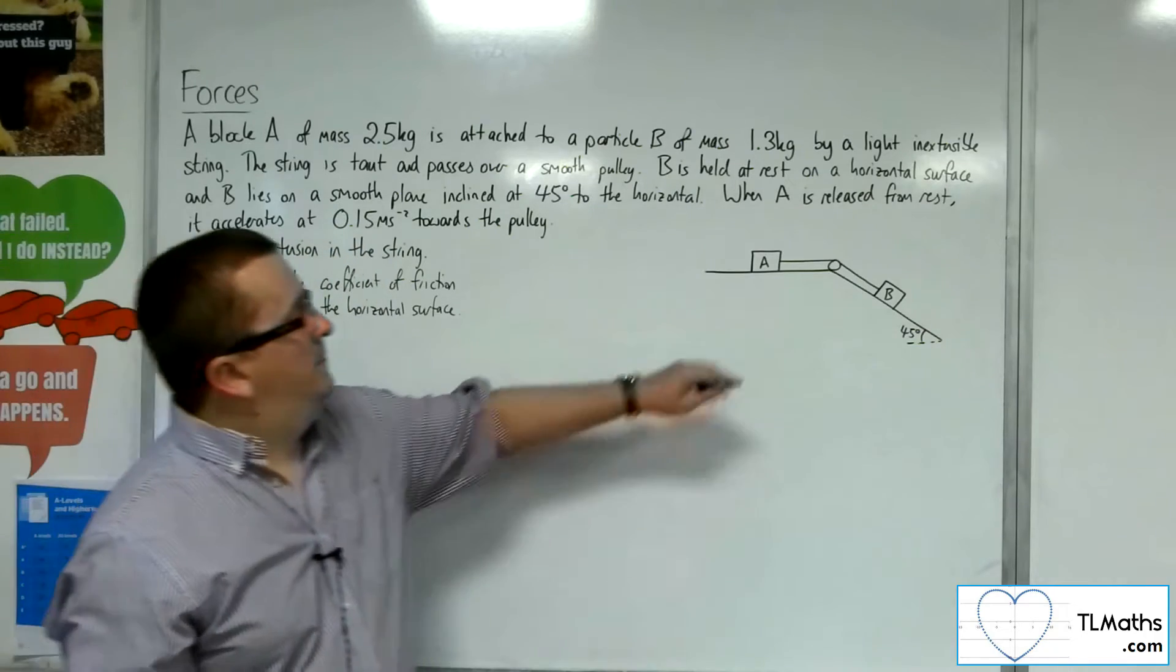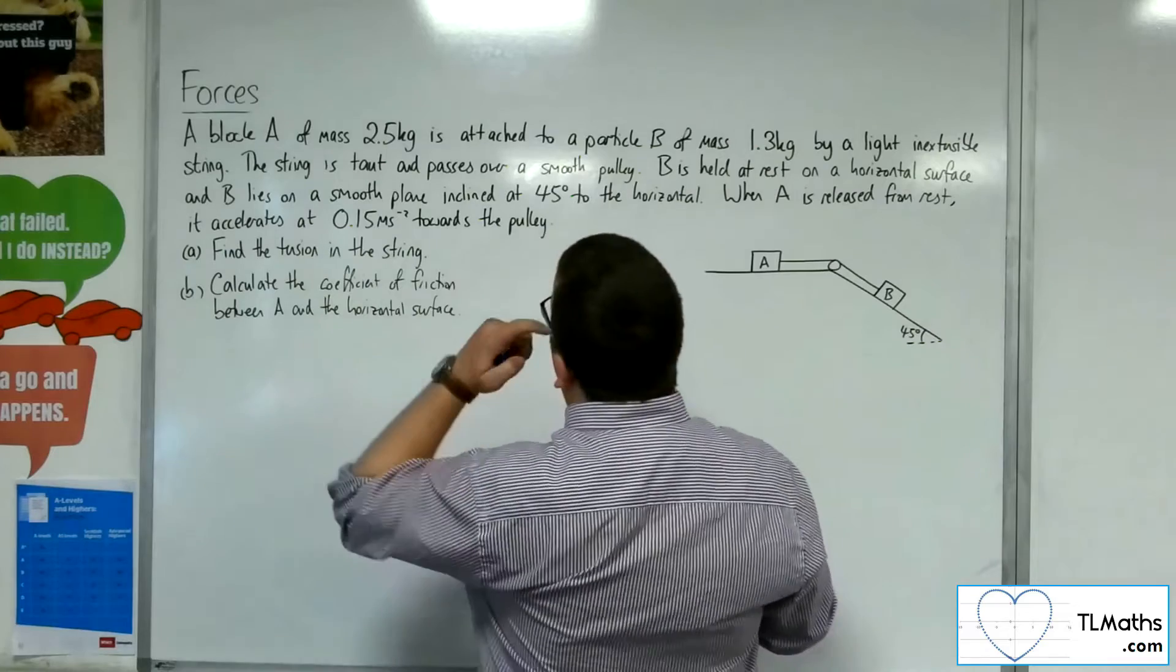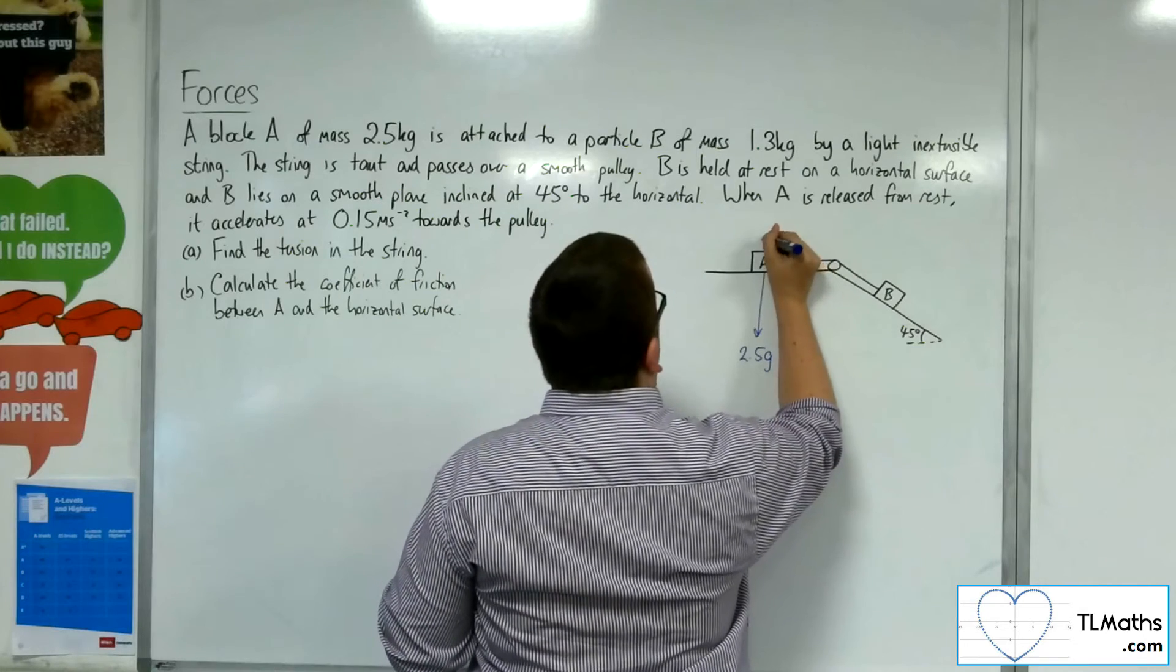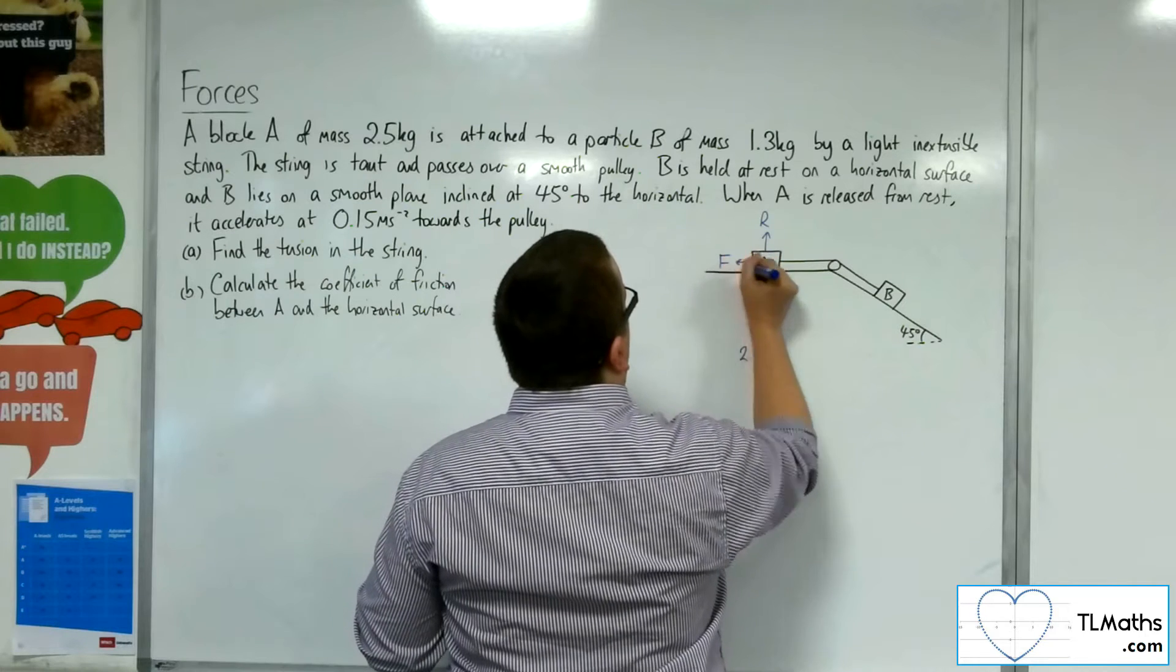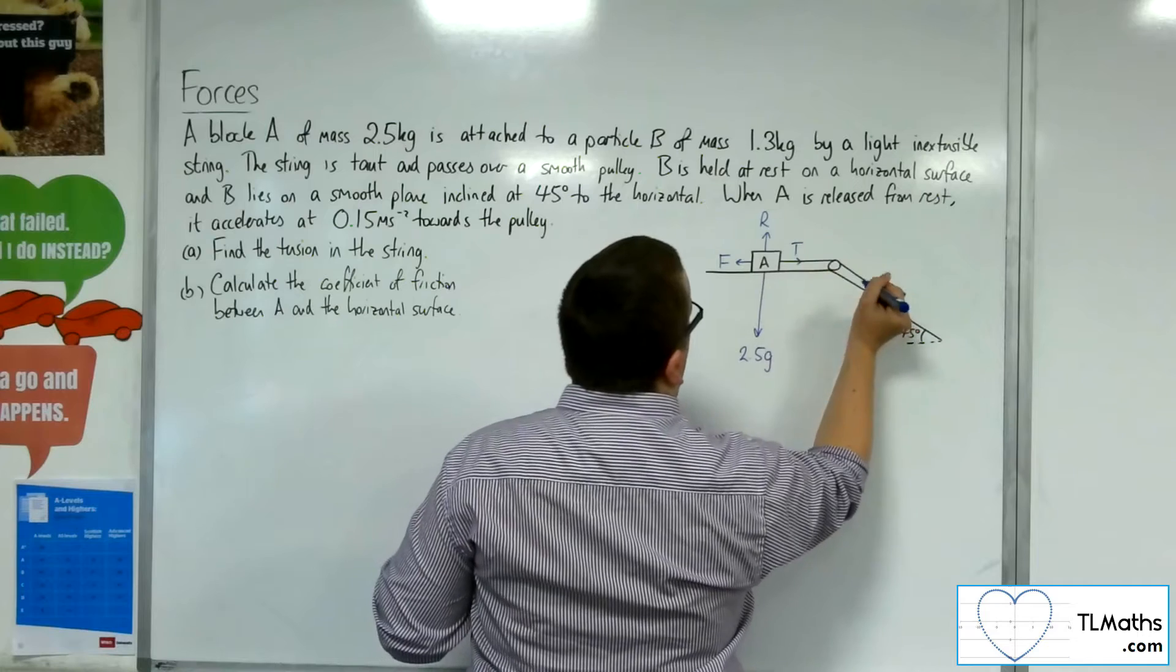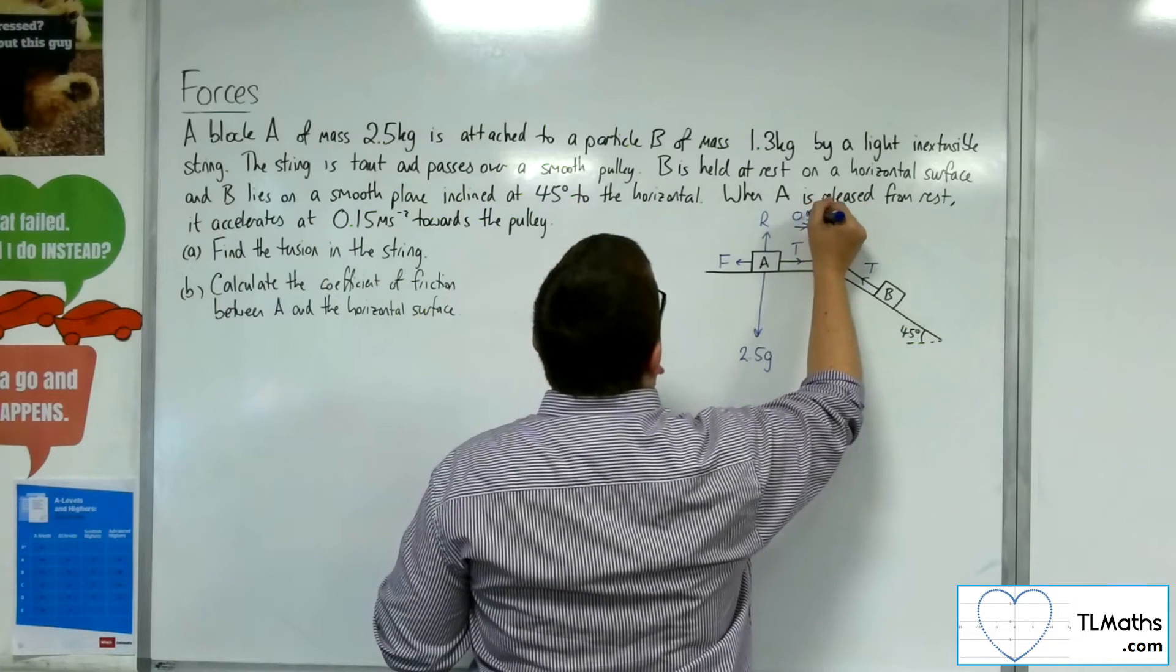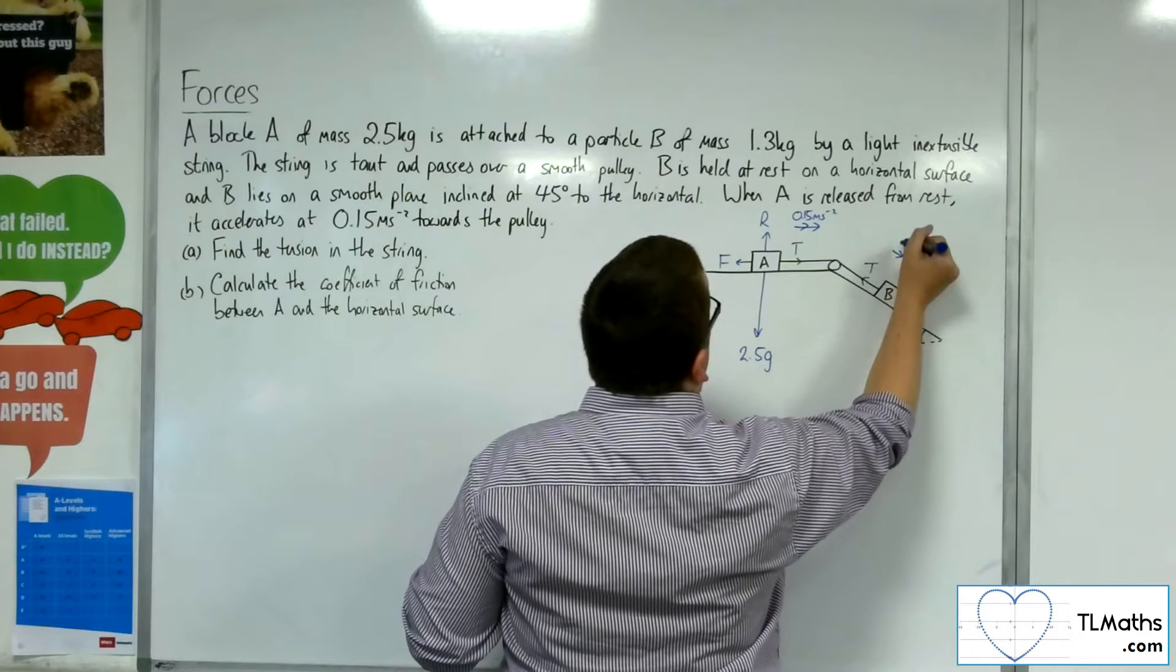So here is my diagram, let's start adding forces to this. So A has a mass of 2.5 kilos, so it has a weight of 2.5 G. There'll be a normal reaction force R, and as we can see from the problem, there's a frictional force working against the direction of motion. There's a tension in the string. We're accelerating at 0.15 meters per second per second, and so accelerating this particle as well.